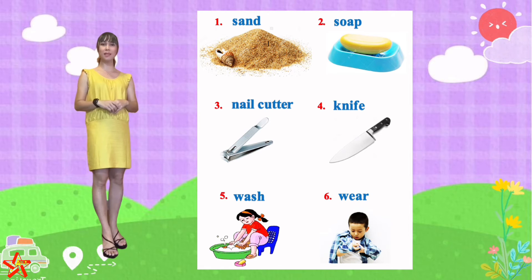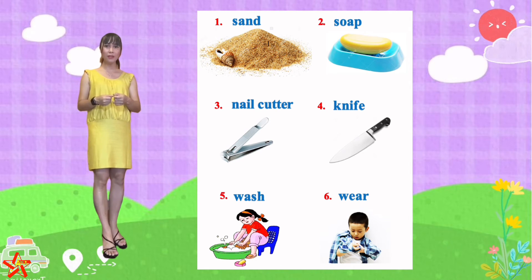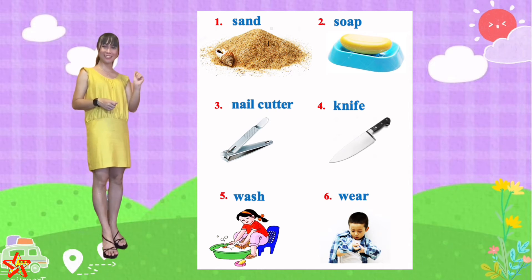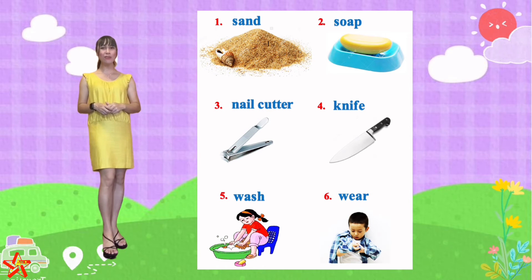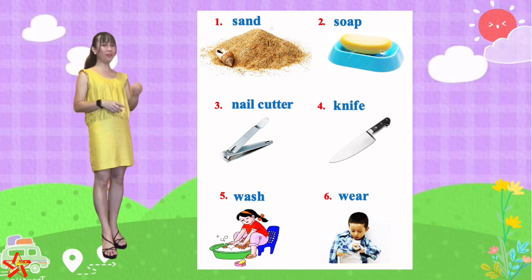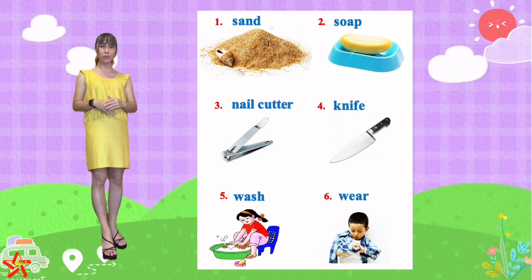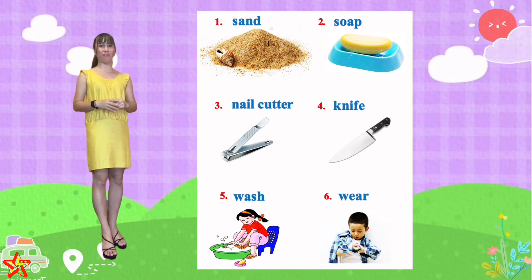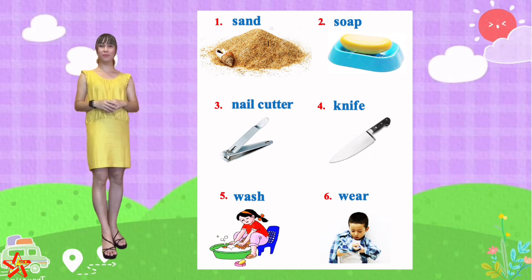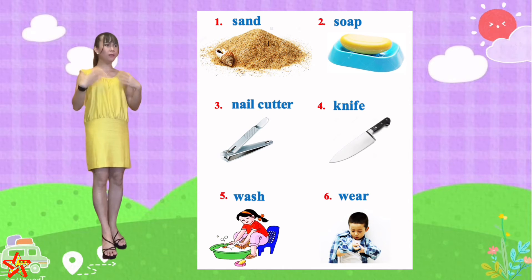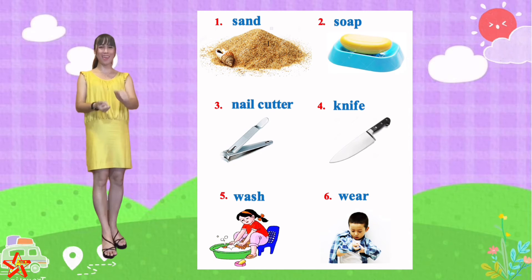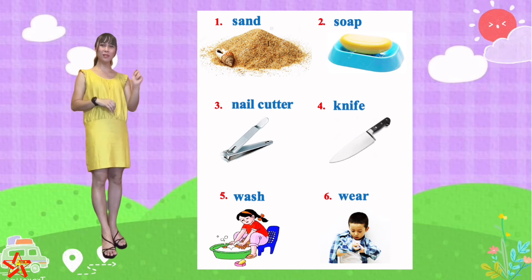How about picture number 3? When you want to cut your fingernails or toenails because they are long, you have to use nail cutter. N-A-I-L-C-U-T-T-E-R. Number 4 — when we cook our food and we want to slice fruits, vegetables, or meat, we have to use knife. K-N-I-F-E. Number 5 — when we have dirty clothes, what does your mother do? Wash. W-A-S-H.